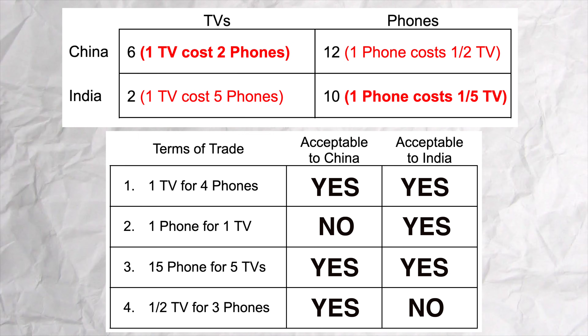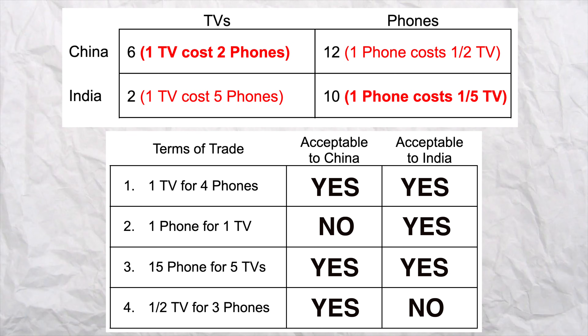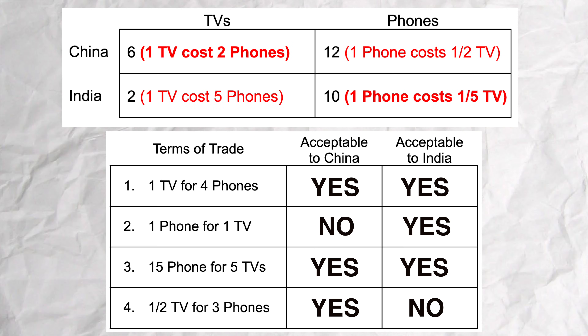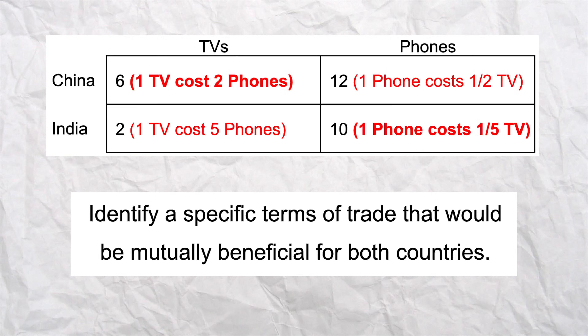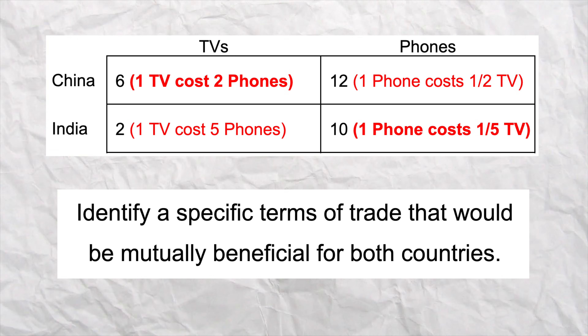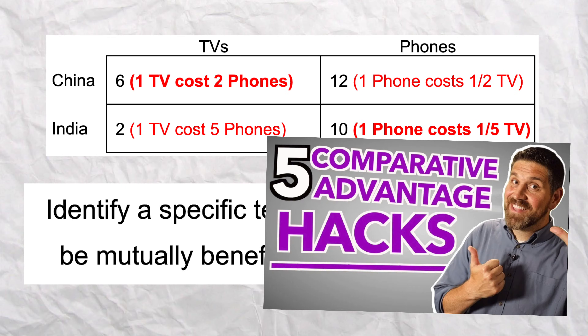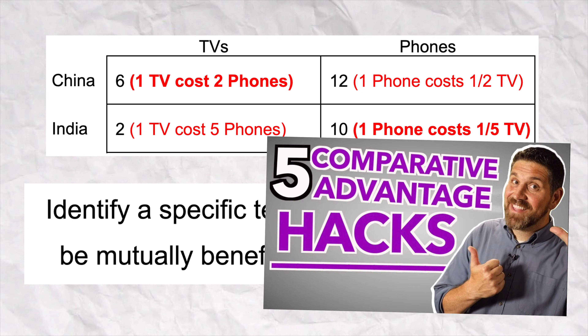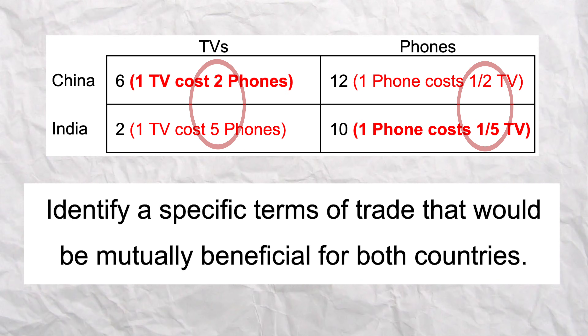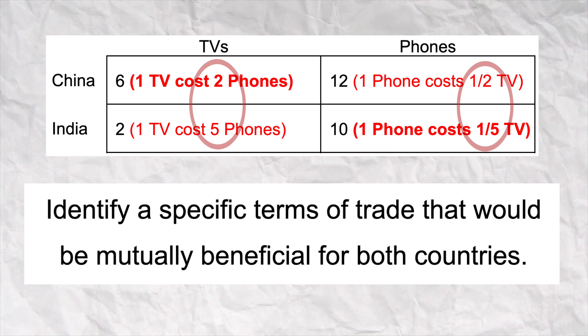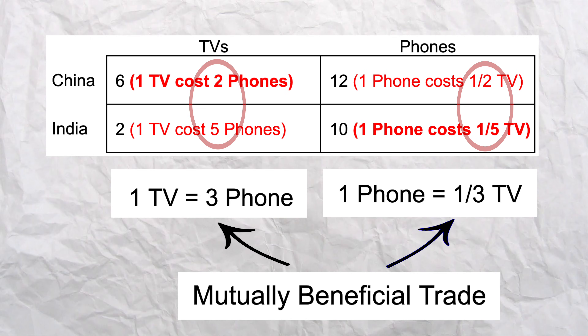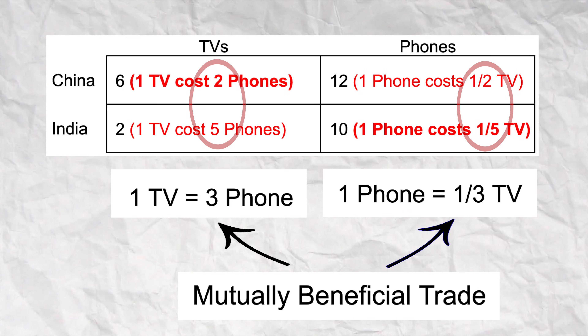I know I went over that really quickly — if you need to, go back and rewatch it. Make sure you can figure out if each country benefits from trade. Now, you're likely not gonna be asked questions like this on your exam. Instead, you're more likely to get questions that say: identify a terms of trade that would benefit both countries, so you'll have to come up with the number. Just remember what I taught you in my hacks video: pick any number between the two opportunity cost numbers and it's gonna work every single time. So one TV for three phones is mutually beneficial and works for both countries.